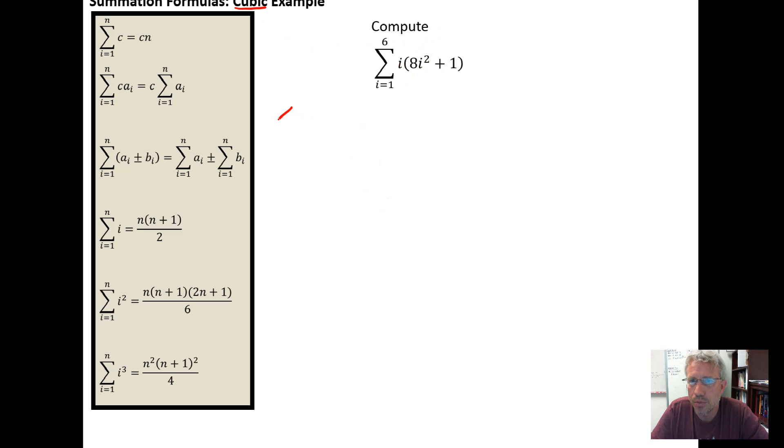I'm going to rewrite my summation. This is the sum from i equal 1 to 6 of i times (8i² + 1). Then I want to recognize that the i can be distributed into the parentheses, which would give me the sum from i equal 1 to 6 of (8i³ + i).